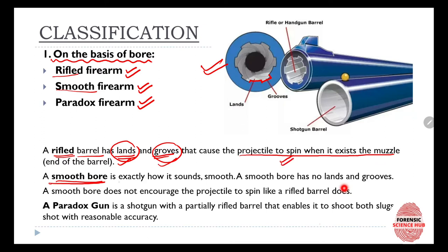On the other hand, a smooth bore is exactly how it sounds — it is smooth, with no lands and no grooves. The example of a smooth bore firearm is a shotgun, while examples of rifled barrels include rifles,